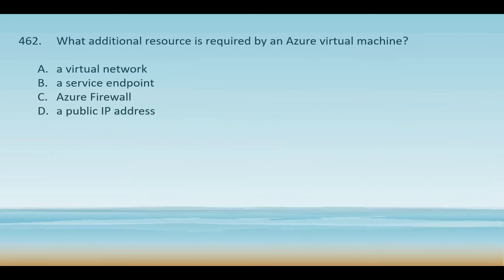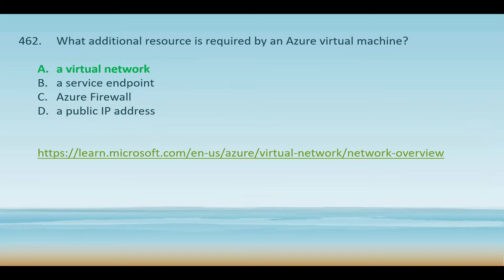What additional resource is required by an Azure virtual machine? Your options are a virtual network, a service endpoint, Azure Firewall, or a public IP address. An Azure virtual machine must be connected to a virtual network to communicate with other resources, whether within the same VNet or across virtual networks. A service endpoint is optional and used to secure access to specific Azure services like storage but is not required for basic VM operation. Azure Firewall is also optional — a network security service providing filtering and protection at the network level. A public IP address is also optional and only needed if the VM needs to communicate directly with the internet.